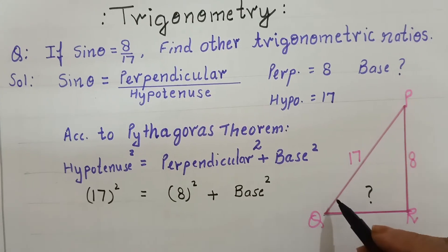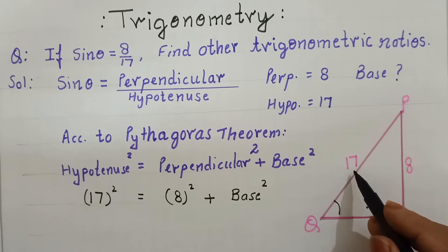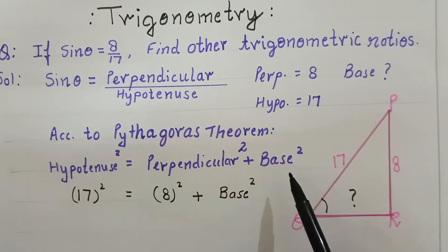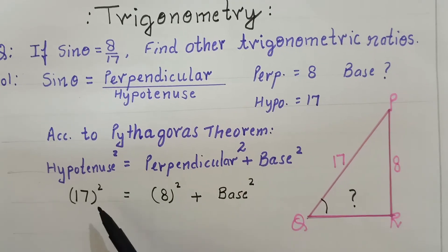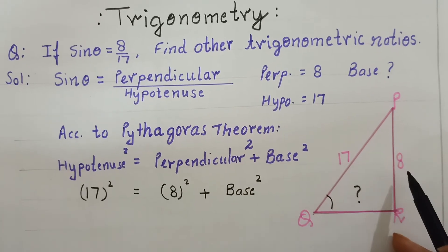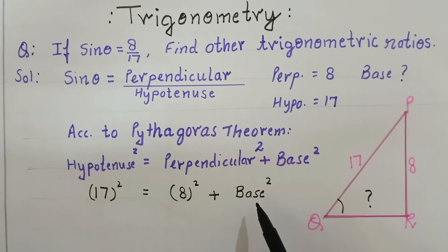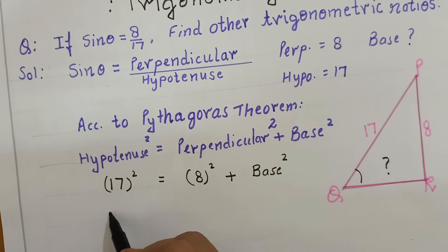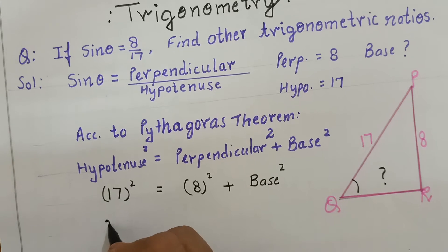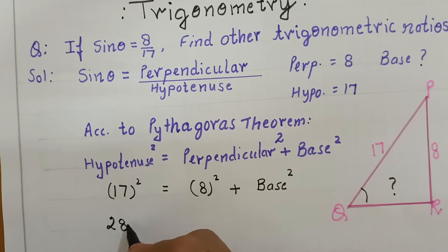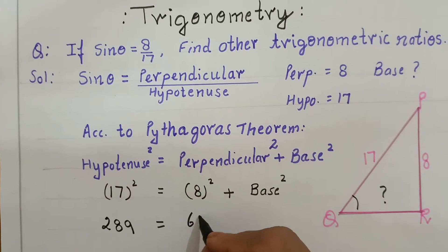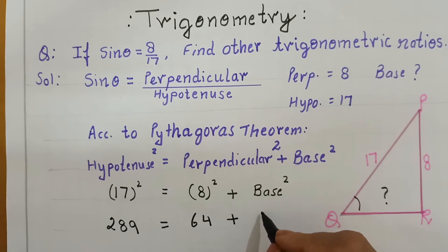Jho hum calculate karengi by using Pythagoras Theorem. According to Pythagoras Theorem, hypotenuse squared equals perpendicular squared plus base squared. Hypotenuse value is 17, so 17 squared equals 8 squared plus base squared. So 289 equals 64 plus base squared.